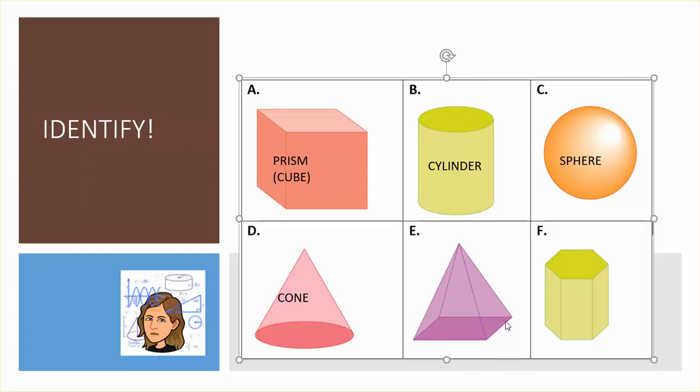E also only has one base. The sides come to a point but all those sides are triangles. That makes it a pyramid.